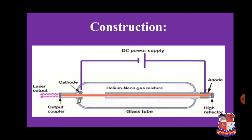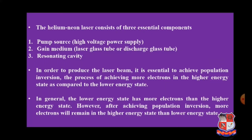You should draw this kind of labeled figure in your GTU examination. The helium-neon laser consists of three essential components. Number one is the pump source, which is the high voltage power supply. As clarified in the principle section, instead of optical pumping, electrical pumping is used — hence the high voltage power supply. Number two is the gain medium, where a laser glass tube, also called a discharge glass tube, is utilized.